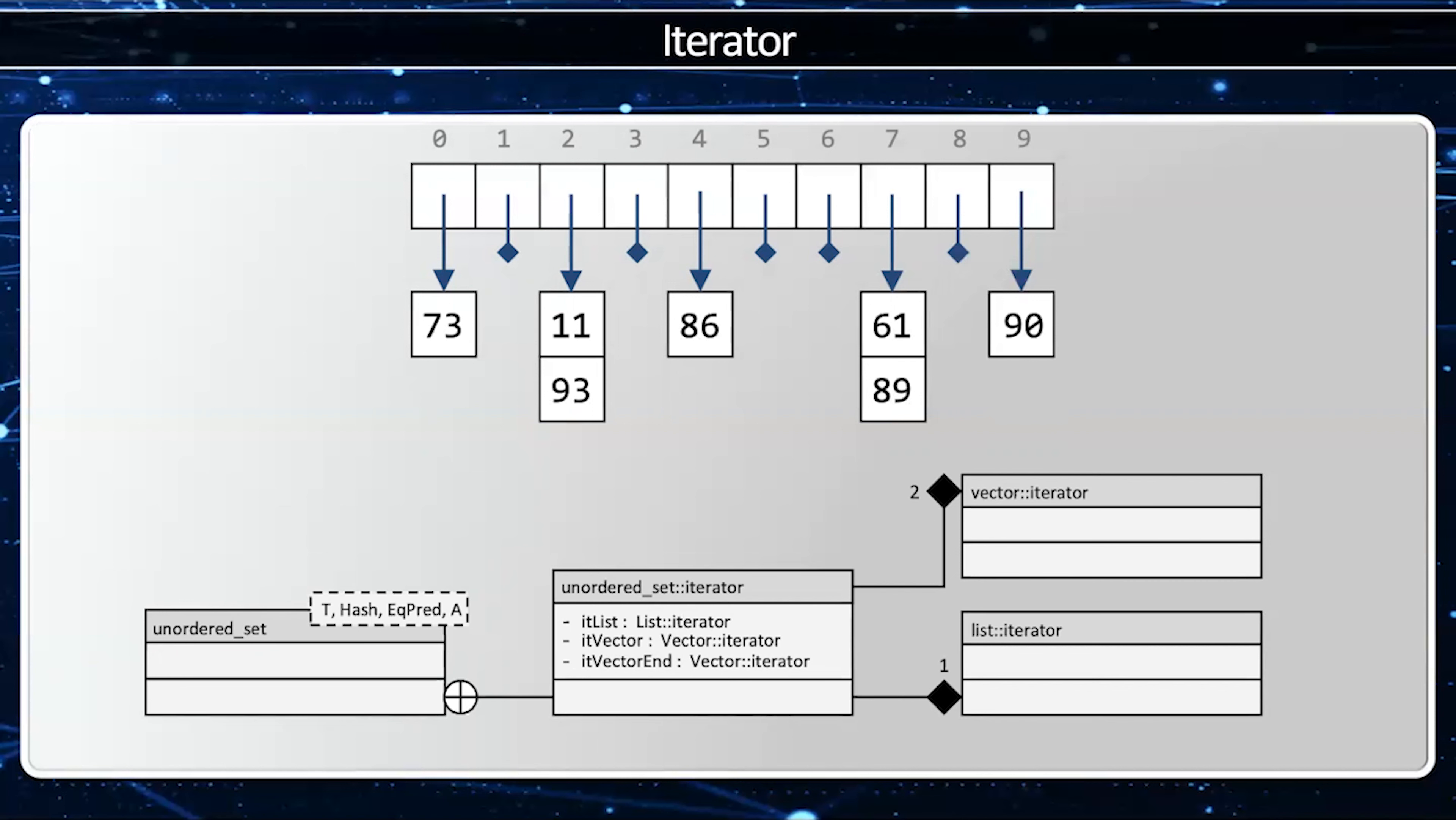The unordered set also has a normal iterator and this visits every element in the collection. Now this one's quite a bit more complicated because not only must it iterate within a single bucket, but when it reaches the end of a bucket it must know how to jump to the next bucket. So therefore it must have a list iterator for within a single bucket. It must have a vector iterator which is going to go through the array and the vector ends so it knows it reaches the end of the vector.